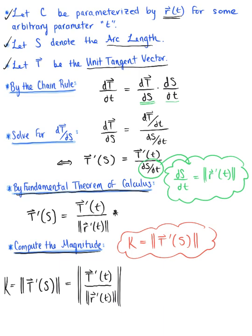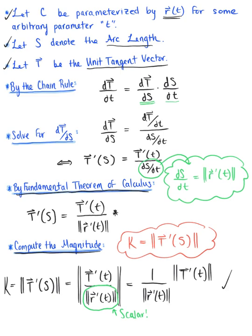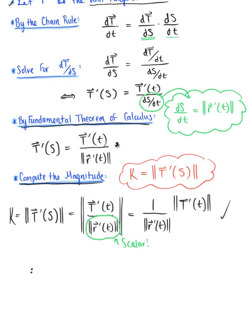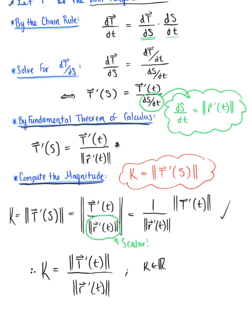Now let's simplify. Looking within this magnitude, the magnitude of the tangent vector is a scalar value. So by the length of a scalar multiple property, we can pull that out — pulling the scalar 1 over the magnitude of the tangent vector to the front, leaving the magnitude of the rate of change of our unit tangent vector with respect to the arbitrary parameter t. This verifies our computation definition, allowing us to conclude that kappa equals the magnitude of T'(t) divided by the magnitude of r'(t), where kappa is a non-negative scalar.